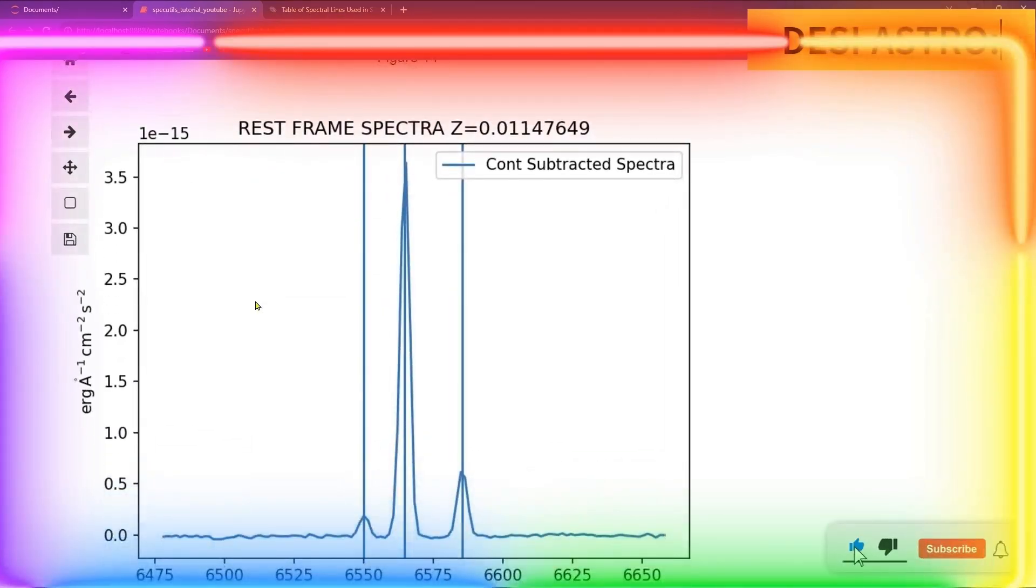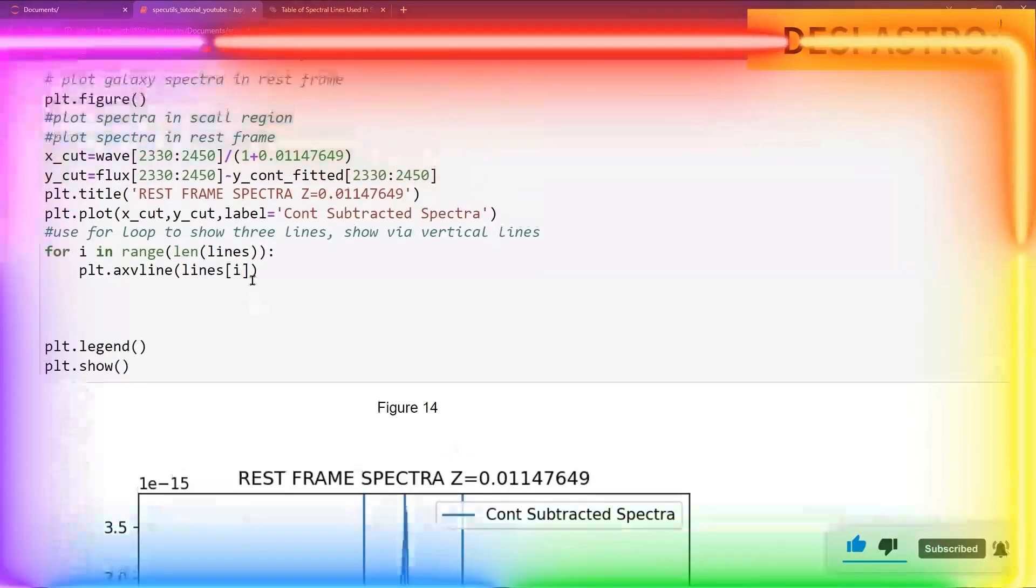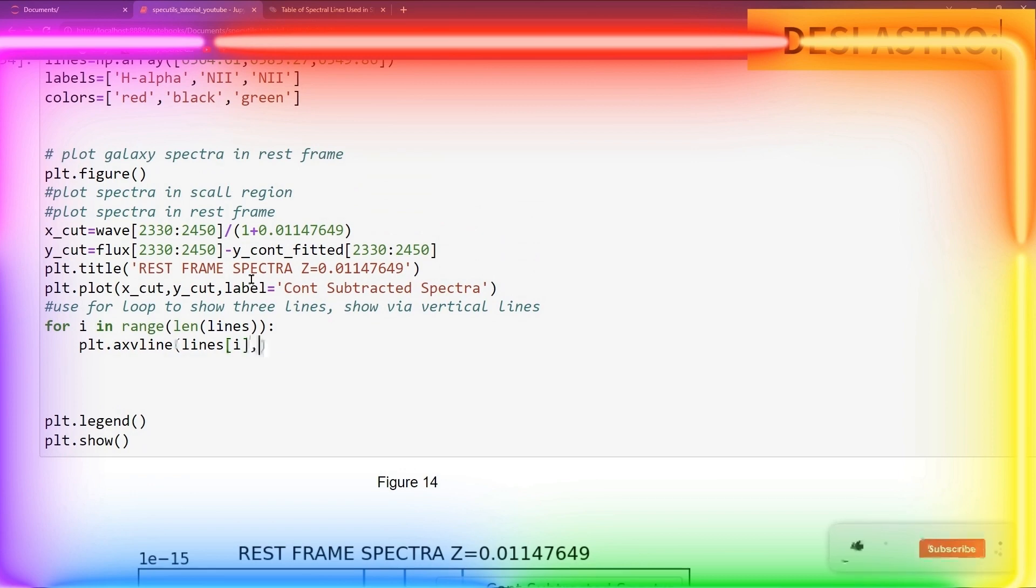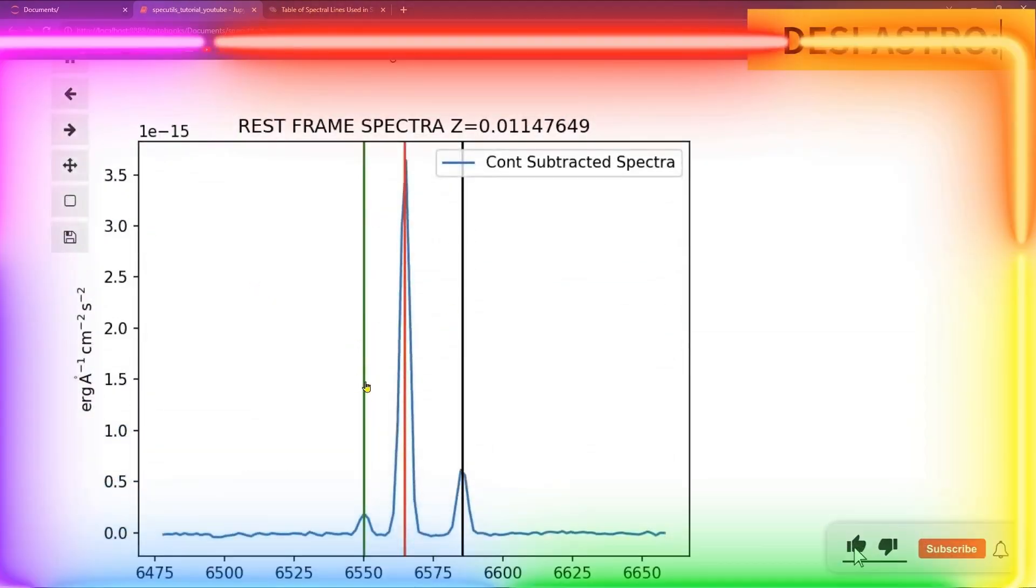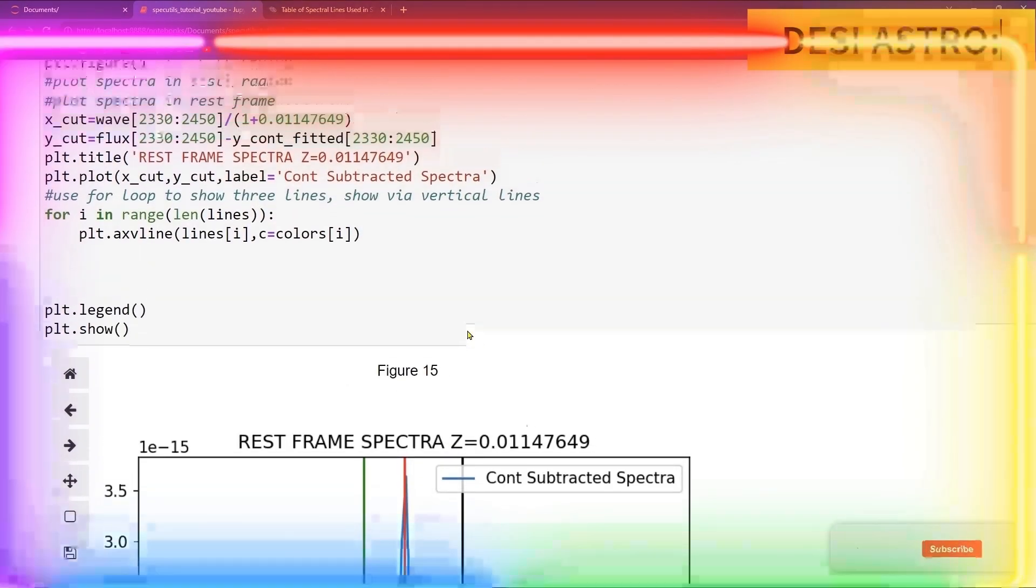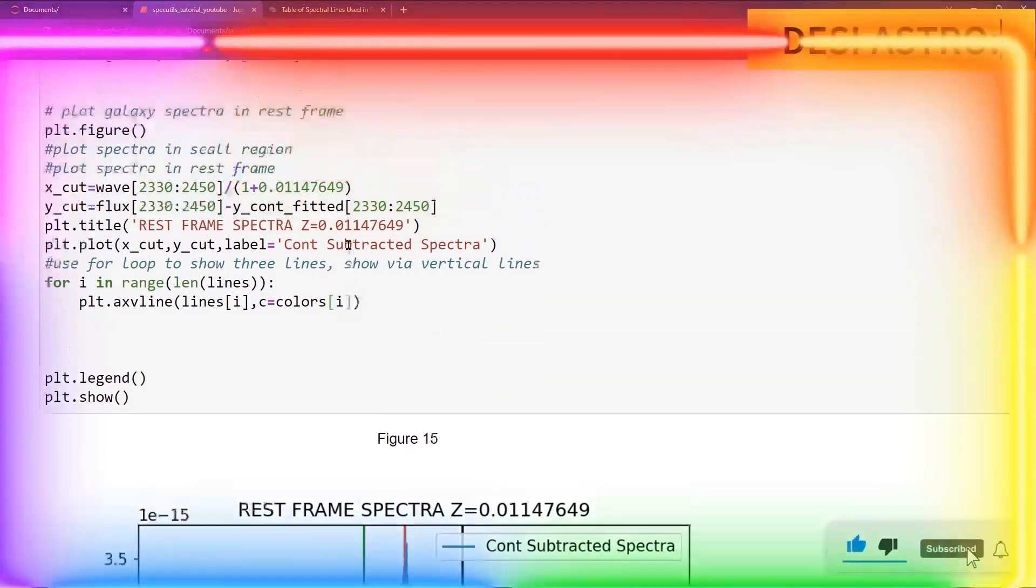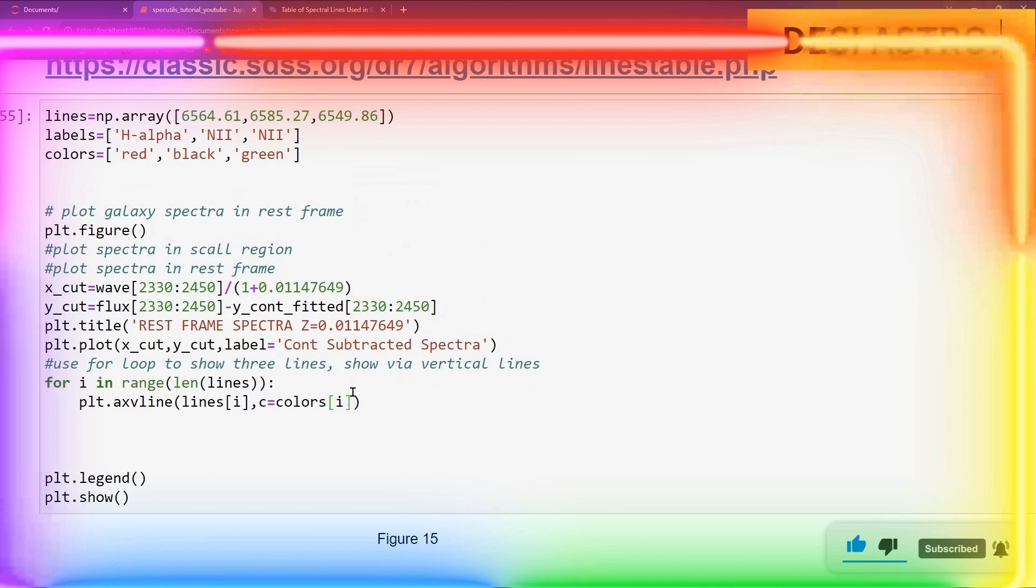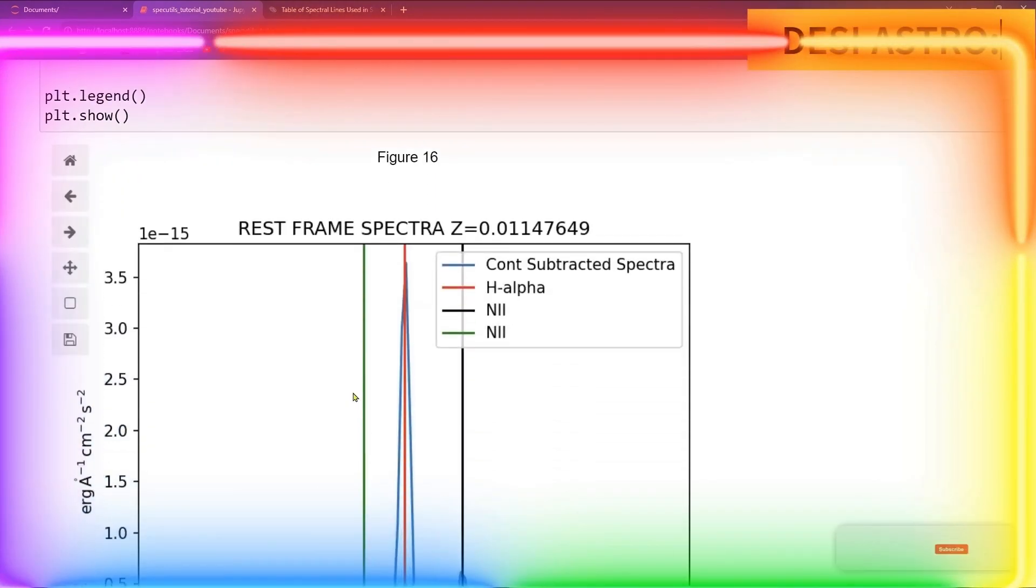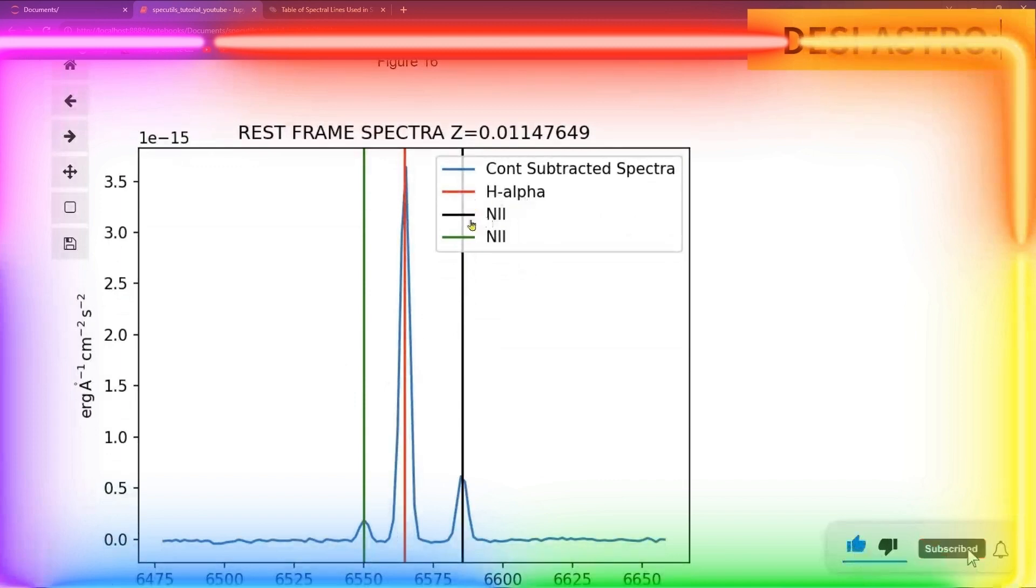Now you want to change different colors for these lines. So you can go here and give c equal to colors and give your index. Here you can see that you have green, red, and your black line for different lines to represent. You can also give label to this. You can give label equal to labels and pass your i. You can see that your red is your H-alpha, black is your N2, and green is also your N2 line.